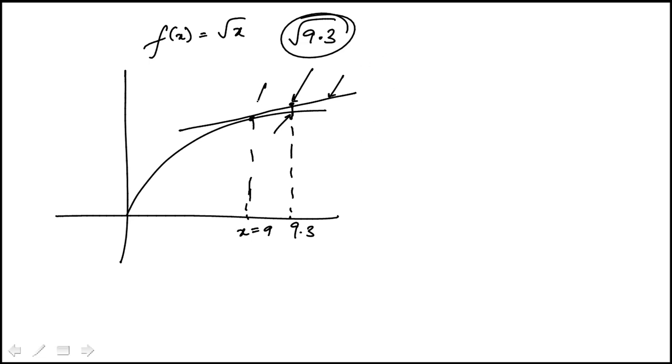So first thing I need is a slope at this point. So slope, I differentiate that function. It's going to be a half and then square root of x in the denominator. So the slope at x equal to 9 would be 1 over 2 square root of 9. That's 1 sixth.